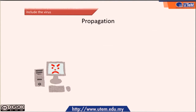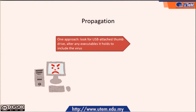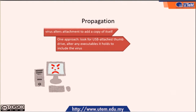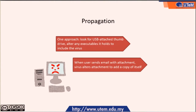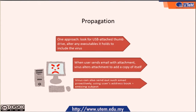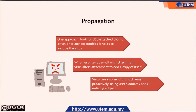How can a virus propagate in our system? When a virus runs, it looks for an opportunity to infect additional systems. For example, one approach is to look for a USB-attached thumb drive which has been altered and can hold the virus. Or it can be sent by an email with an attachment that has been altered to have the virus copied in it. Viruses can also send out emails using the user's address book, with an enticing subject.